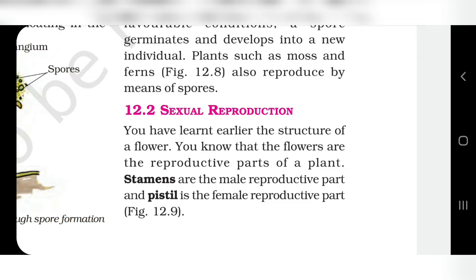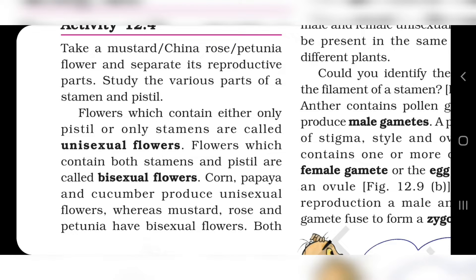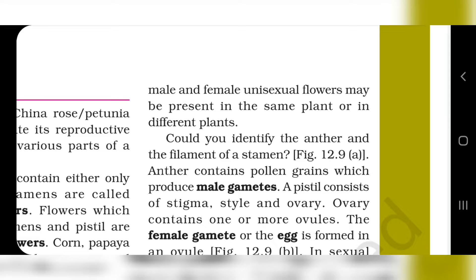Sexual reproduction. Stamens are the male reproductive part and pistil is the female reproductive part. Unisexual flowers contain either pistil or only stamens — they are called unisexual flowers. Please note this, as it can be a short question for you. Bisexual flowers contain both stamen and pistil. Corn, papaya and cucumber grow in unisexual flowers. Mustard, rose and petunia have bisexual flowers.